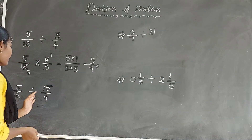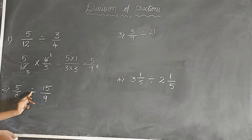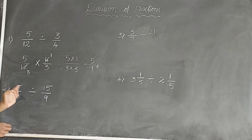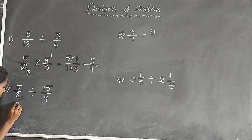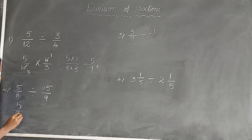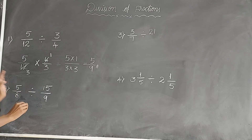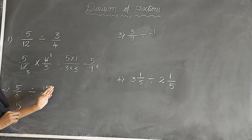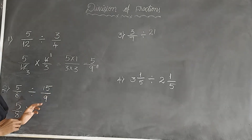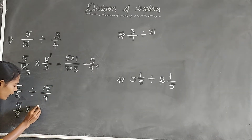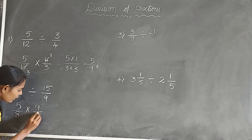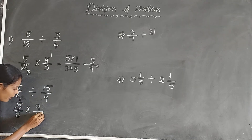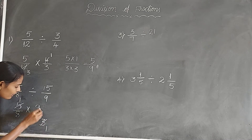Let's see one more example. Here we have 5 by 8 divided by 15 by 9. First, write this fraction: 5 by 8. Instead of the division symbol, write the multiplication symbol. The reciprocal of 15 by 9 is 9 by 15. 5 cancels with 5, and 5 cancels with 15, leaving 3.